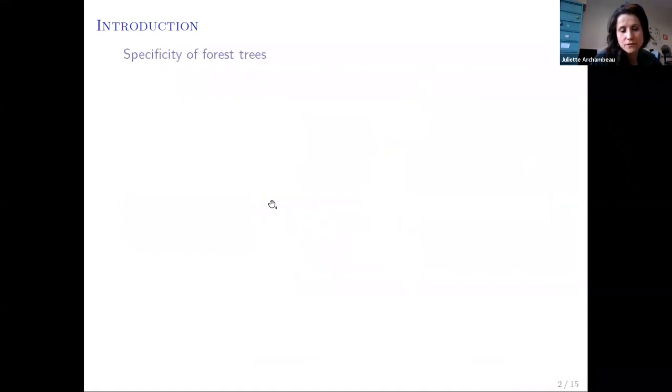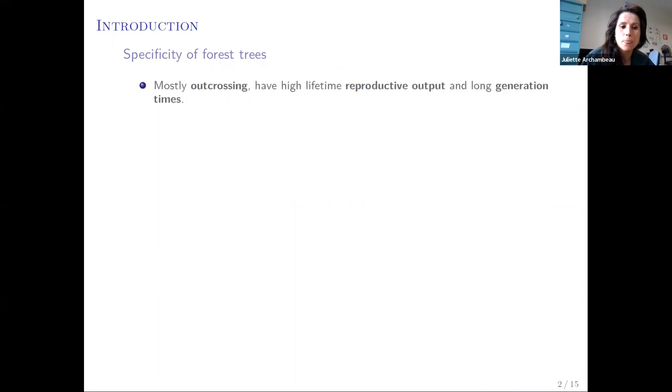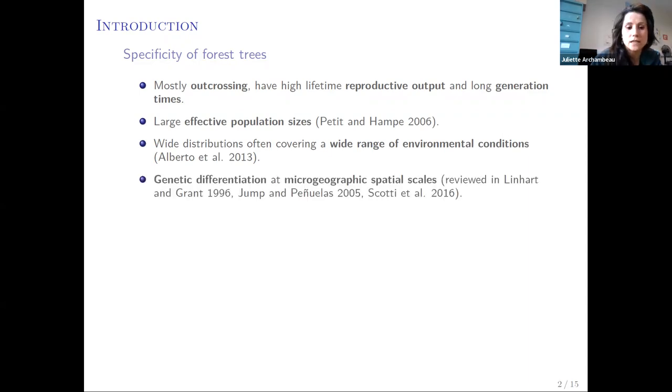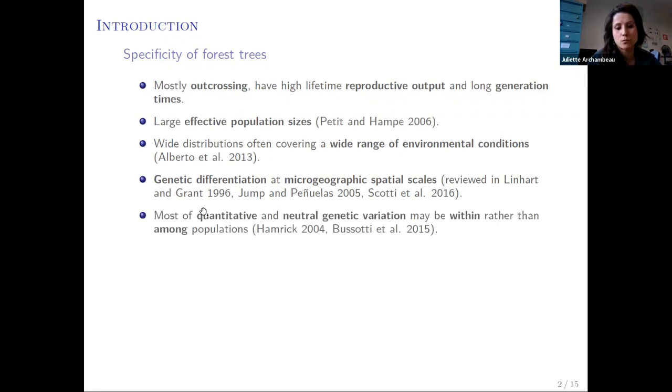Forest trees present specific features that make them particularly interesting for the study of evolutionary mechanisms. They have lifetime reproductive output and long generation times, often have large effective population sizes with distribution covering a wide range of environmental conditions. Genetic differentiation at very small geographical scales have been repeatedly detected in forest trees and most quantitative genetic variation is within populations.